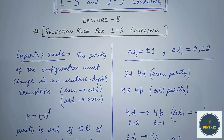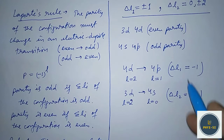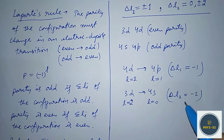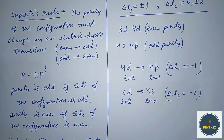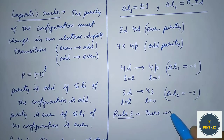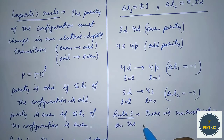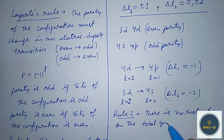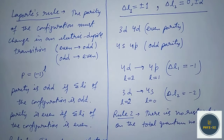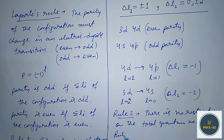We can see that the total change in the azimuthal quantum numbers of the configuration is odd overall. There is no restriction on the principal quantum number n, whether we have one electron, two electrons, or more. Rule number three now concerns LS coupling.